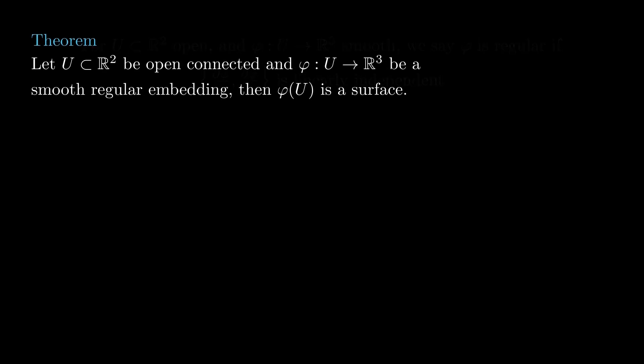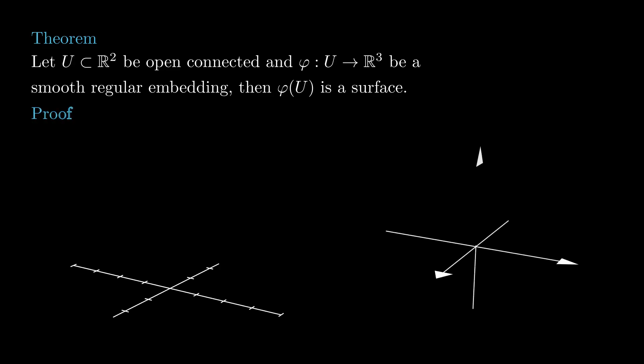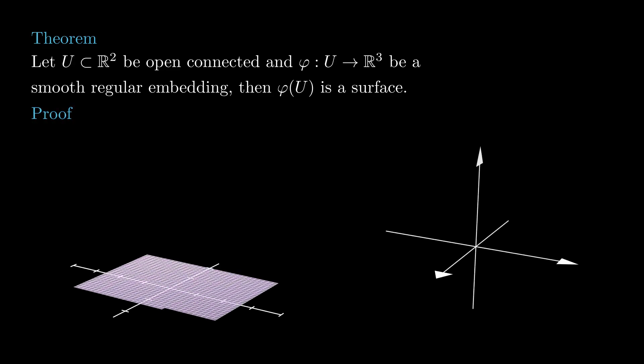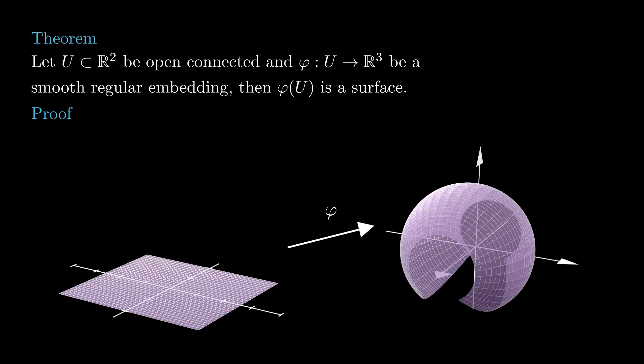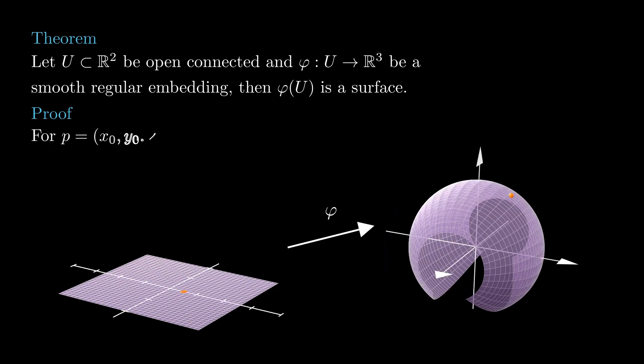one can show that if u is an open subset of the plane and phi is a smooth regular embedding from u to the space, then the image of phi is a smooth surface. To see this, notice that for each p in the image of phi,